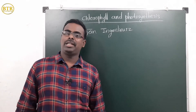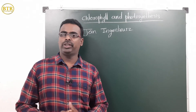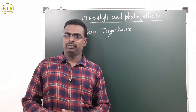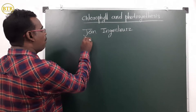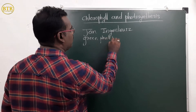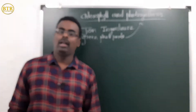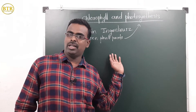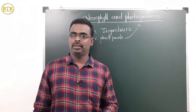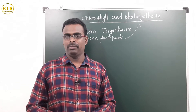John Ingenhouse, in the 18th century, wanted to find more about photosynthesis. He carried out many experiments and finally proposed that only green plant parts could carry out photosynthesis.